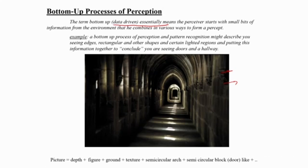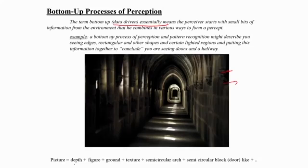In contrast, the top-down process will look at this picture and compare it with something you have seen before, trying to match it up. So if you have been to a hall or cathedral like this before, how closely that stored representation of a hall in your mind fits this image — and using that to interpret this as a corridor of a cathedral — that is the top-down process. For the bottom-up process, this picture is built from facts like depth, figure-ground, texture, semicircular arches, semicircular blocks, doors, and so on.